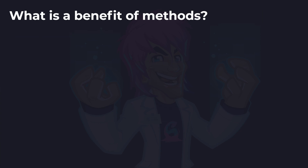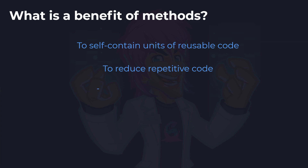And the last question: what is a benefit of methods? Is it to self-contain units of reusable code, to reduce repetitive code, or to make code easier to read? And the answer is all three. Methods help us reduce our code into smaller chunks, help us test easier, reduce repetitive code by replacing the variable pieces with parameters, and self-contain blocks of code into named methods. It's all about keeping code simple, small, and understandable in chunks we can reuse.